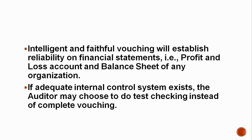If there is an adequate internal control system, the auditor may choose to do test checking instead of complete vouching. If the internal control system is very effective in any business, then the auditor does not need to check every single entry from A to Z. Once the internal control system is confirmed to be good and effective, the auditor chooses test checking instead of complete vouching.